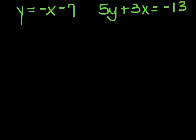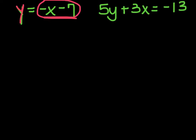The new method is called substitution. Substitution is really nice to use when you have an equation that says y equals something, or x equals something — where one of the variables is isolated on one side. Right here it says that y is equal to this value, so I'm going to take this value and plug it in, or substitute it, for y in the other equation.